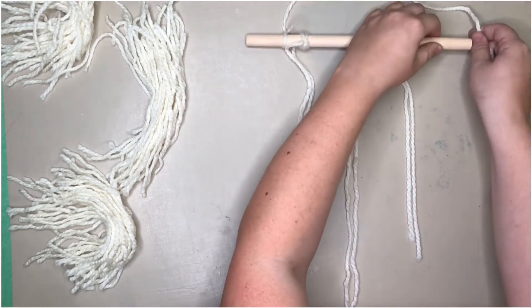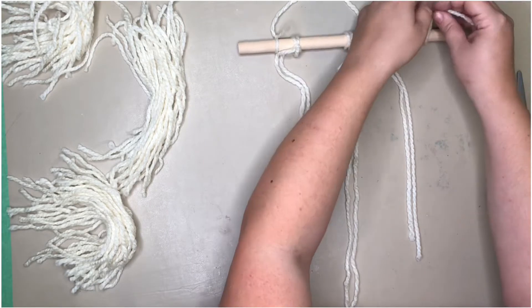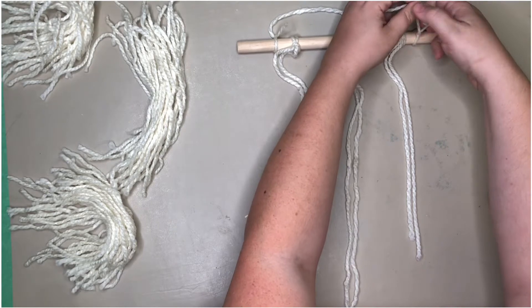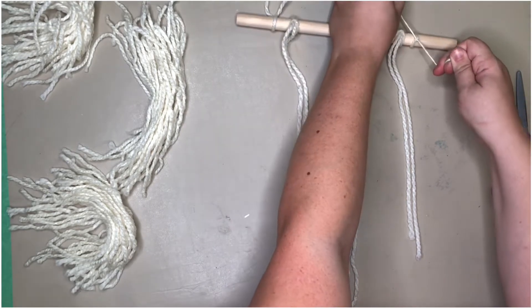Each little bundle of yarn has about 30 pieces of yarn, maybe six to eight inches long, and each group will make each one of the feathers.